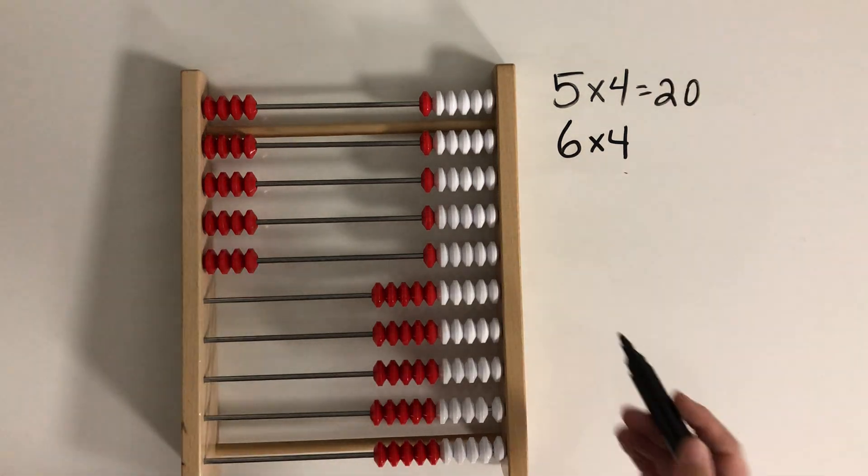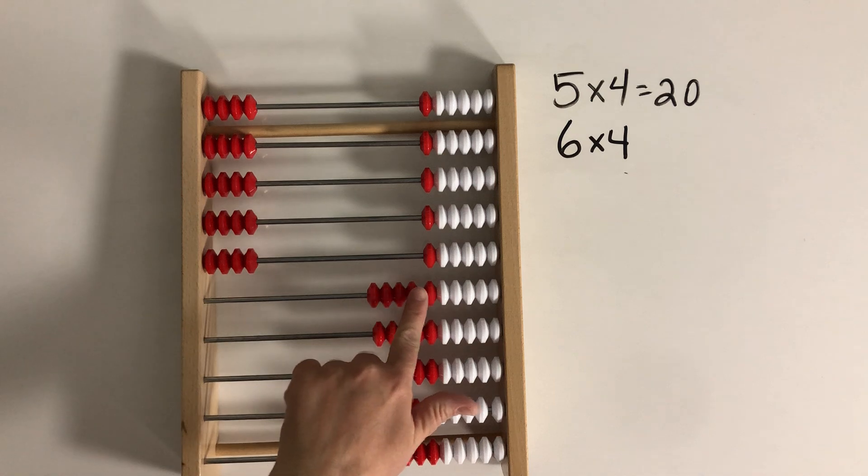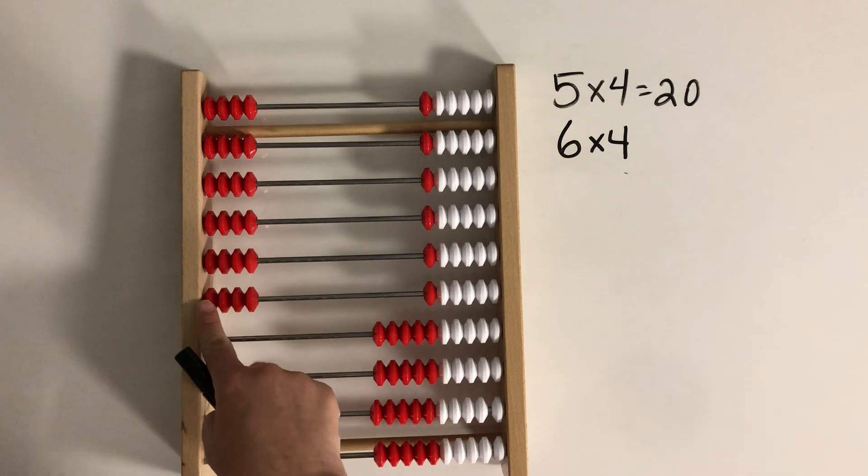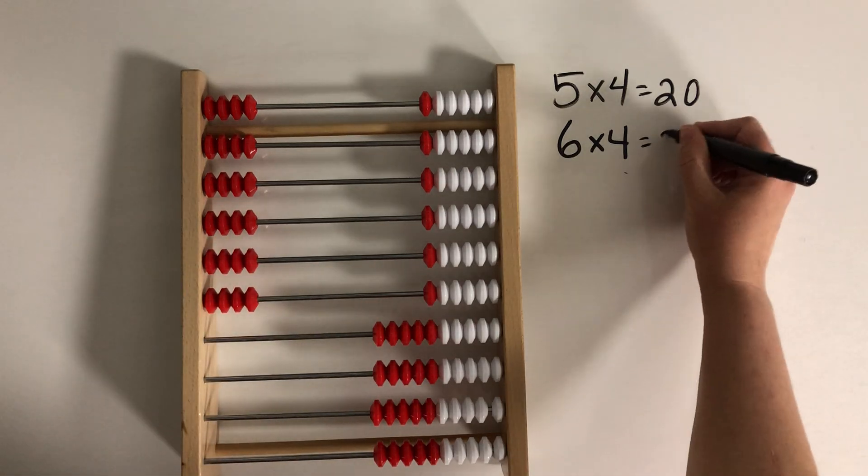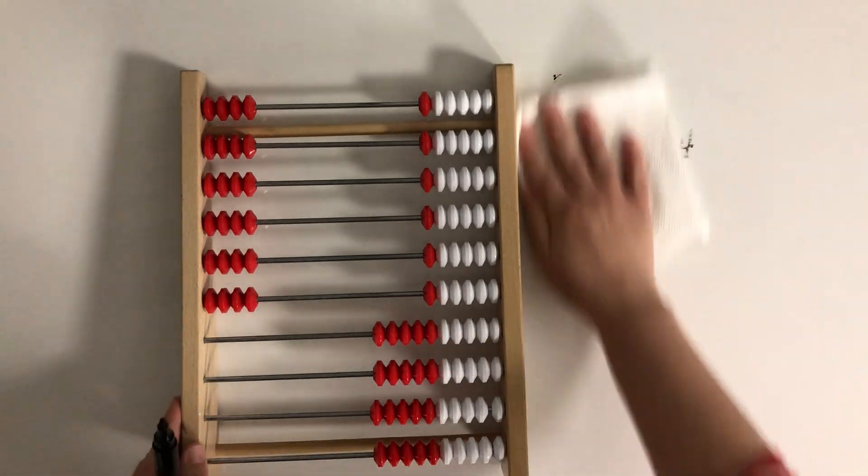So when we want to figure out what 6 groups of 4 makes, we're just going to add 1 more group of 4. So if we had 20 and now we're adding 1 more group of 4, what do we have? We have 24. So let's take a look at how we could do that with another one.